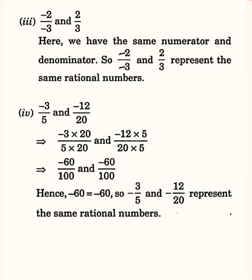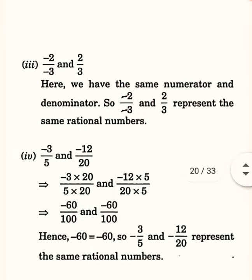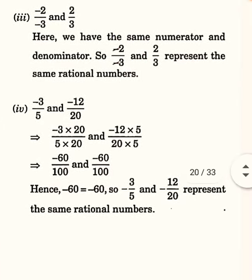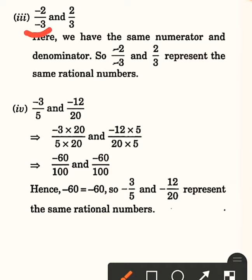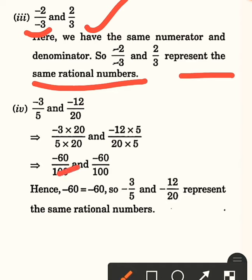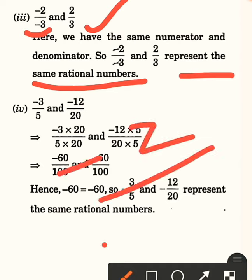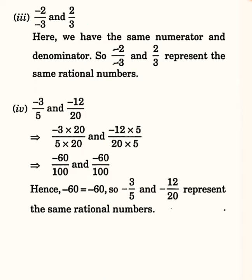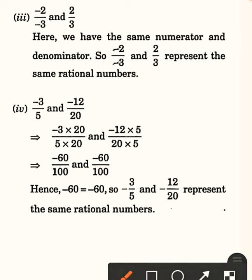So minus 2 upon minus 3 is actually only 2 upon 3. The minuses cancel out. This is 2 upon 3, and the other number is also 2 upon 3, so they are the same rational numbers. If the same number has two negative signs — one in the numerator and one in the denominator — they cancel out. No calculation needed here.